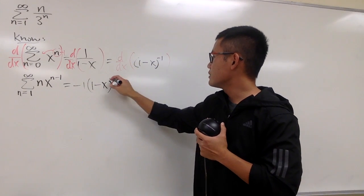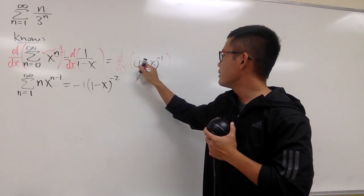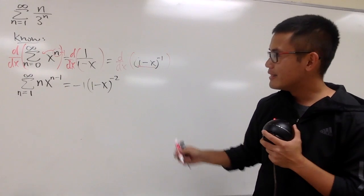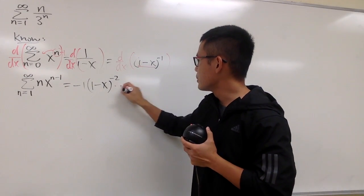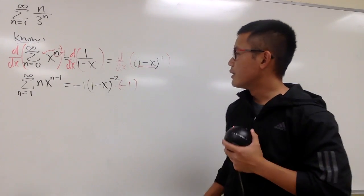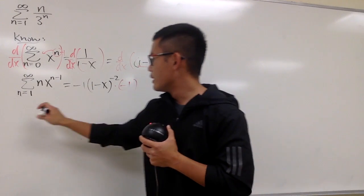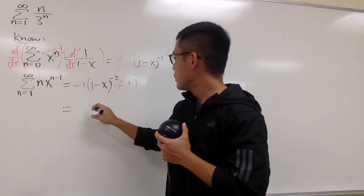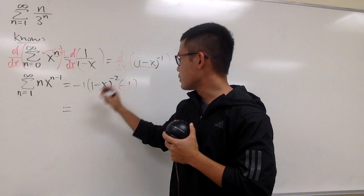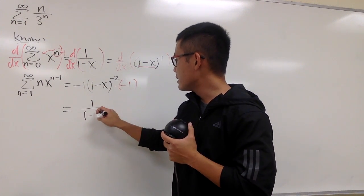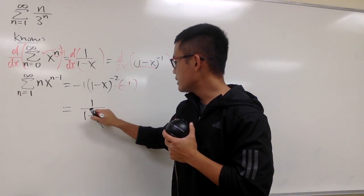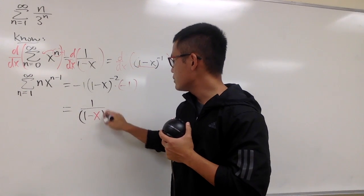and then don't forget to do the chain rule. Multiply by the derivative inside, which is multiplied by negative 1. Okay, so in another word, this is the same as... Well, negative negative becomes positive, so we have just 1 over (1 minus x) to the second power.